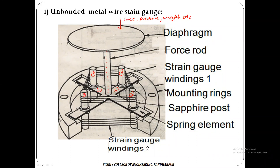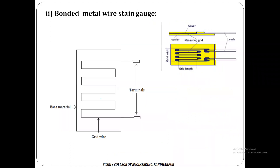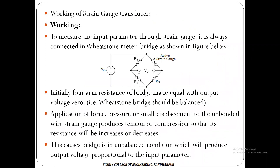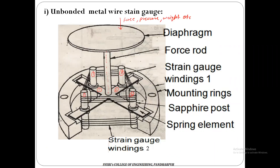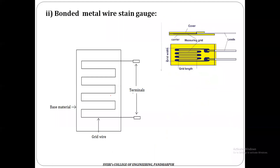When we want to measure the change in resistance, the strain gauge is always connected in a Wheatstone bridge. In this construction, the wire is wound on four poles on the top and bottom sides without being bonded to a base — that's why it is called an unbonded wire strain gauge.